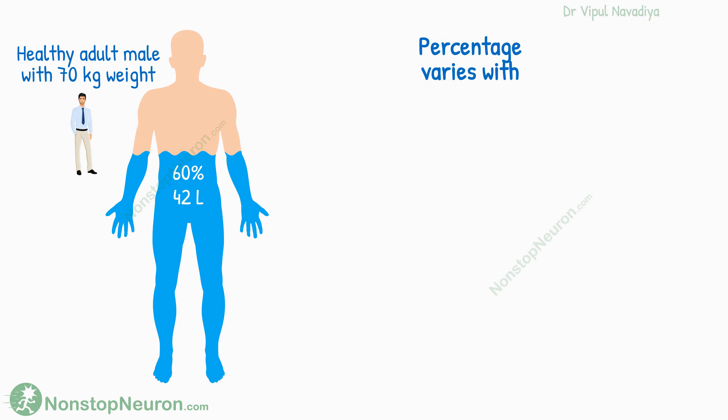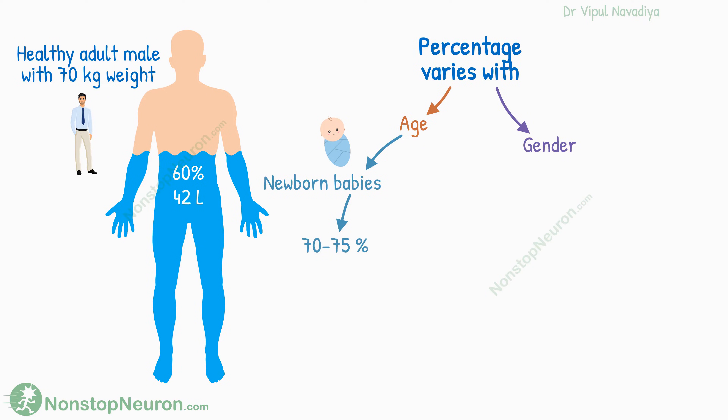However, this percentage differs depending on age, gender, and other conditions. For example, in newborn babies, water makes up 70–75% of total body weight.